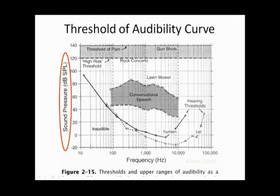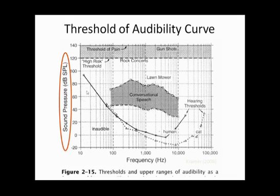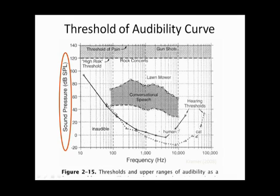Notice at 20 hertz, the average normal threshold for humans is 80 dB SPL. So can humans hear 80 dB SPL on average? The answer is yes, if it's at a high enough level — if it's at 80 dB SPL, yes, humans can hear that. What about 10,000 hertz? The answer is yes, if the level is presented at about 18 dB SPL. Notice that across frequencies, the sound pressure level related to average normal hearing changes across frequency.